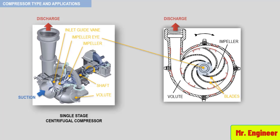The gas is then conducted around the volute housing in an ever-increasing escape channel. As the pathway increases, the velocity decreases and even more pressure is added to the gas, again according to the Bernoulli principle. Then, the gas leaves the compressor at discharge pressure, prepared to overcome the resistance in the system.